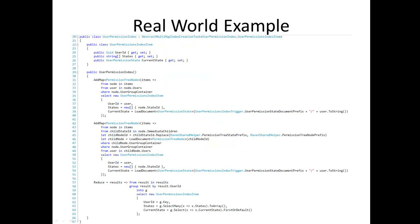Here's our real-world example of an abstract multi-map index creation task — that is a multi-map reduce function that does recursive reduction to build a permission tree index. There's a little bit of a performance bug there — there's a prize for whoever spots it. We've already fixed it.